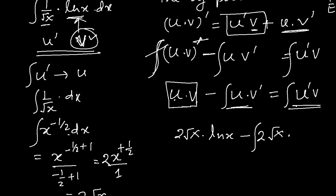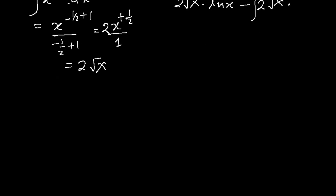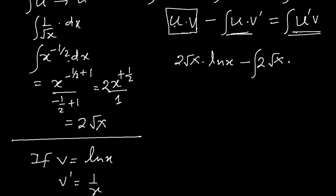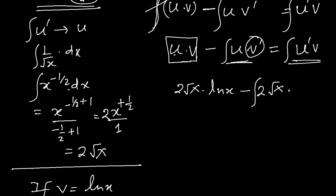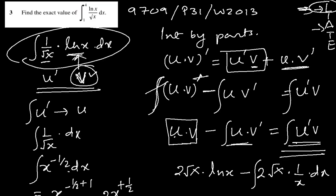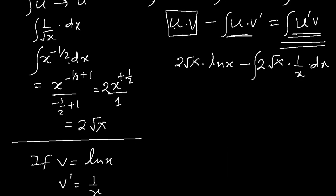Let me do it somewhere else. If V is ln x, so V prime will be 1 over x, that is the differentiation of ln x. So since we need V prime here, in this one we need V prime here, so we will write 1 over x dx, and that will be equal to our question, which is this one. Now, so everything is ready with us now, let's do it now.